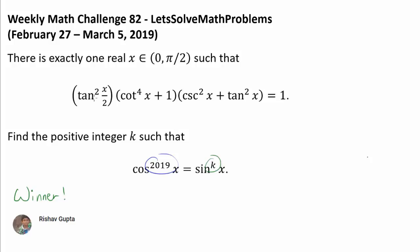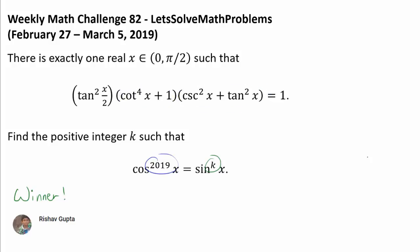At first glance, this problem looks very difficult. You have this crazy equation with tangent of x over 2, cotangent of x to the 4th power, and it seems like we cannot apply any trigonometry identity right away to cotangent of x to the 4th plus 1, or cosecant squared of x plus tangent squared of x. But it turns out this problem is much easier than it looks because you can actually finish it using straightforward bashing.